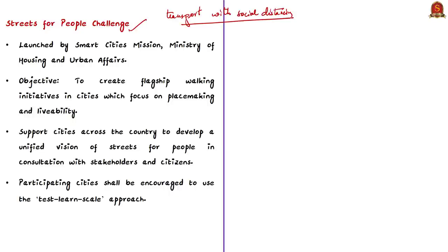The crucial steps to mitigate these issues are the pedestrianization of streets for walking and creating public spaces. So the Smart Cities Mission under the Ministry of Housing and Urban Affairs has launched the Streets for People Challenge. This challenge aims to create flagship walking initiatives in cities which focus on place-making and livability, inspiring cities to create walking-friendly and vibrant streets through quick, innovative and low-cost measures.